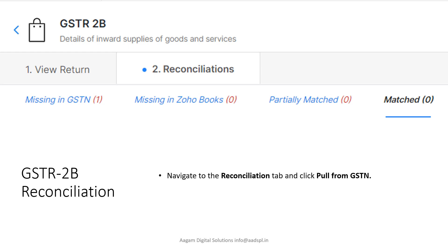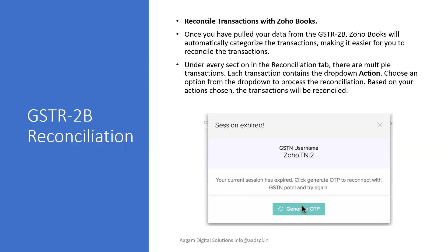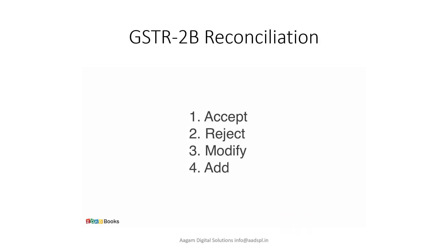To get data from the portal, we will fetch data by generating an OTP. The OTP shall be received on the registered number with the GST portal. After getting this data, we have to pull this data from the portal into Zoho Books for GST R2P Reconciliation.